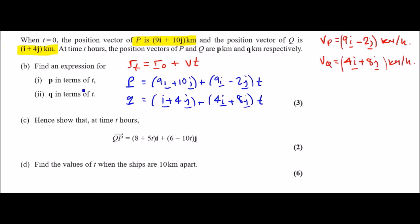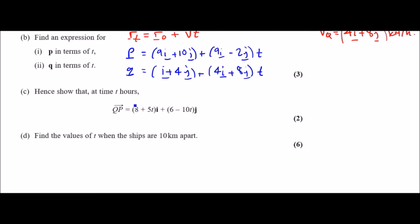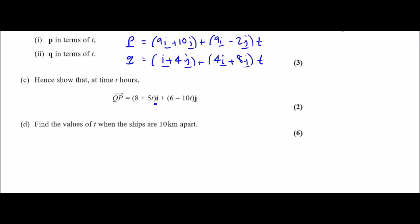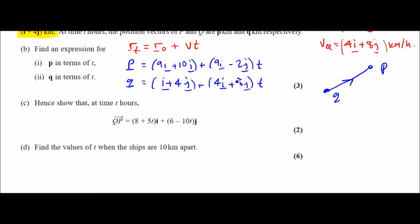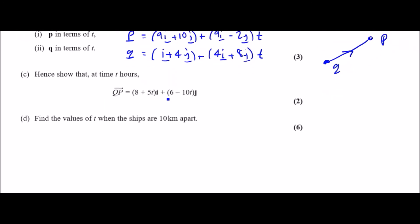Part c: Hence show that at time t hours, the vector going from Q to P is given by the following. When it says go from Q to P, we literally just find the direction from these two vectors. To find this expression, this is simply the difference from P to Q—you just do P take away Q to get this. Let's subtract these vectors.